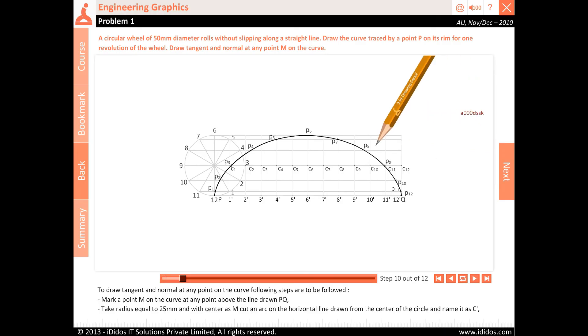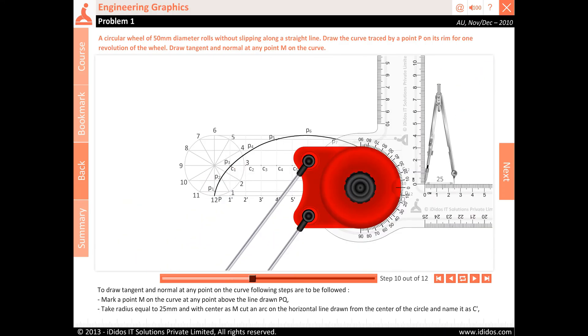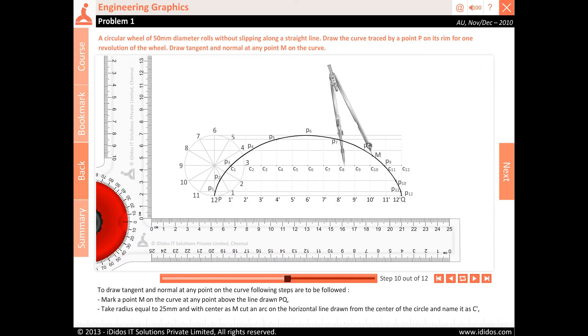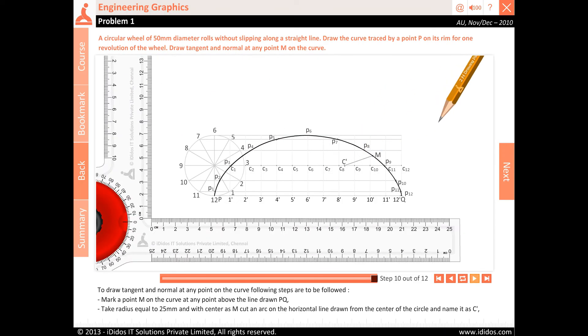To draw tangent and normal at any point on the curve, the following steps are to be followed. Mark a point M on the curve at any point above the line drawn PQ. Take radius equal to 25 mm and with center as M, cut an arc on the horizontal line drawn from the center of the circle and name it as C′.